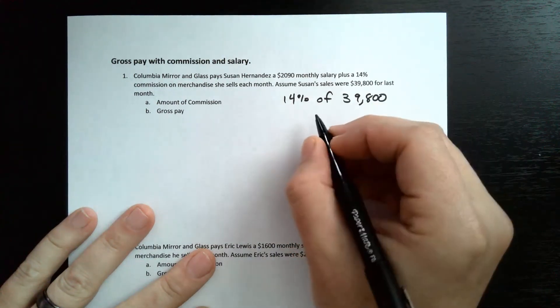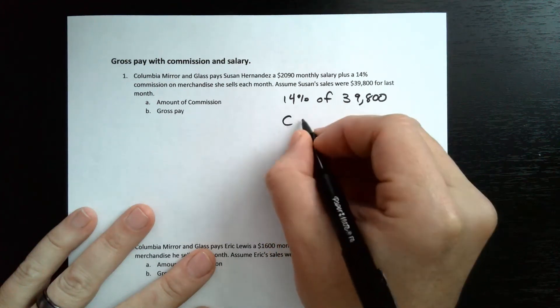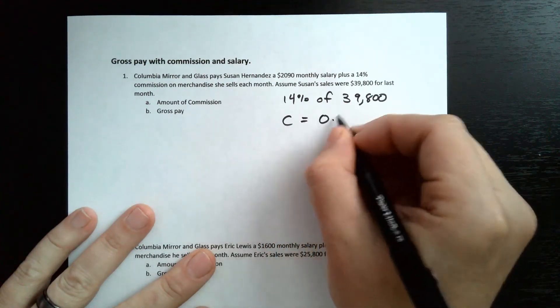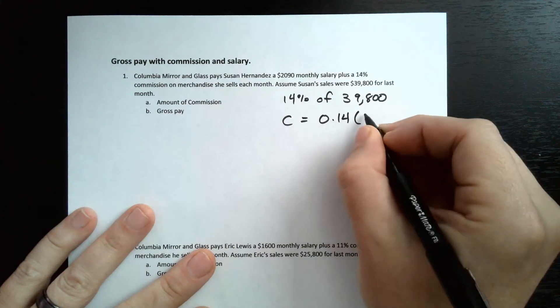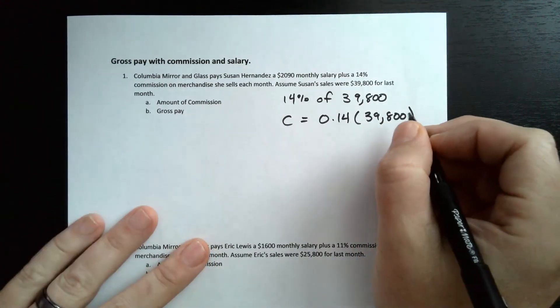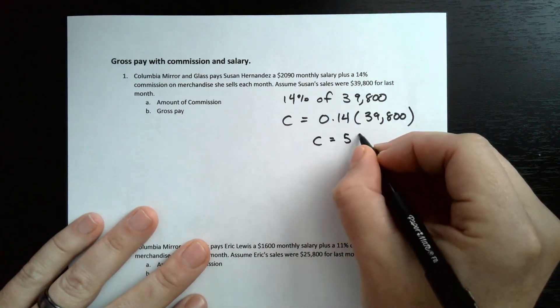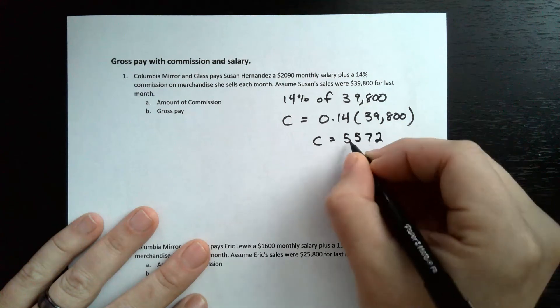To write that in math, that would be, we'll say C is equal to 0.14, C for commission, times $39,800. When you do that, you're going to get C, commission, is equal to $5,572.